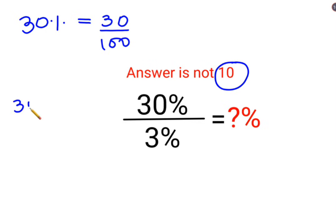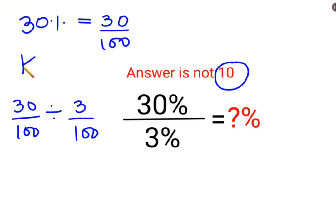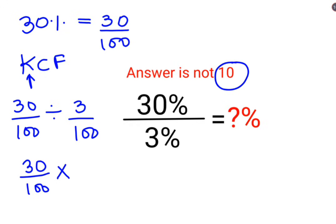30% can be written as 30 upon 100, divided by 3%, which is 3 upon 100. Now, whenever there is a fraction involved in division, you will follow the acronym KCF. K stands for keeping the first number as it is. C stands for changing the division sign to multiplication. F stands for flipping, or taking the reciprocal, of 3 upon 100, which is 100 upon 3.